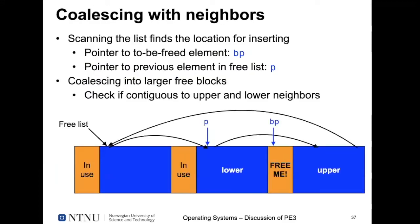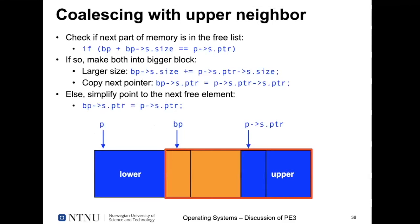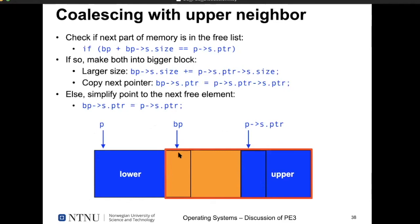Coalescing is needed when neighboring blocks in memory are already free. After inserting the freed block bp at its correct sorted position between p and p->next, we check if bp's memory region is adjacent to the following free block (upper) and to the preceding free block (lower). If so, we merge them into one large free block to maximize the size of available free blocks for future allocations.